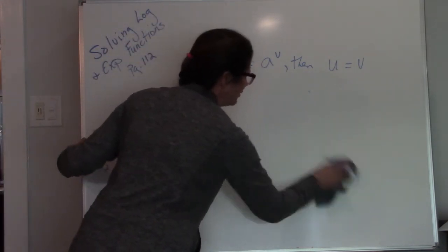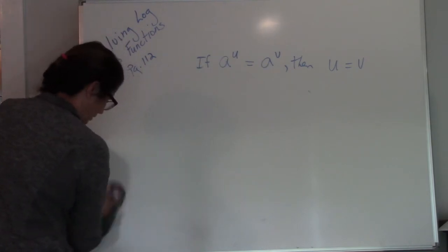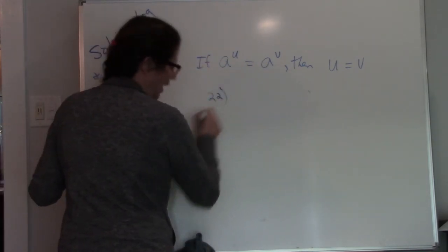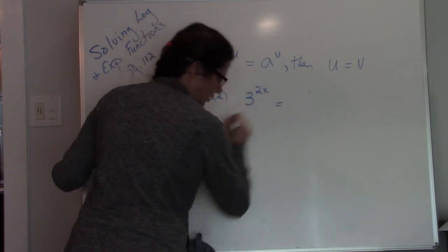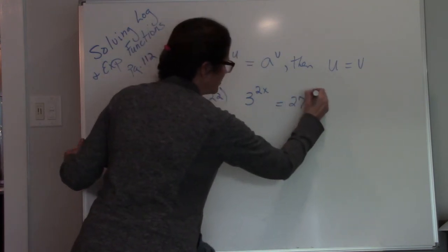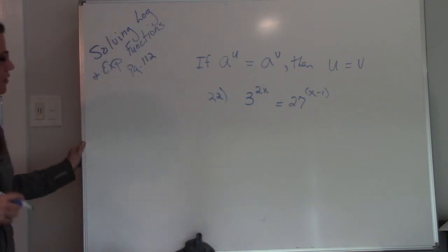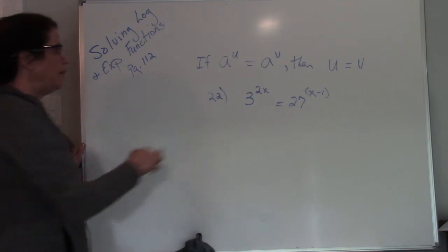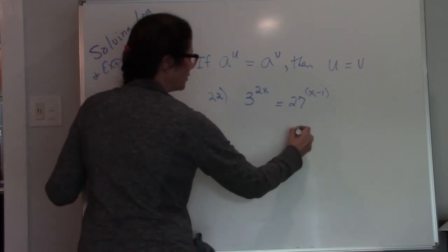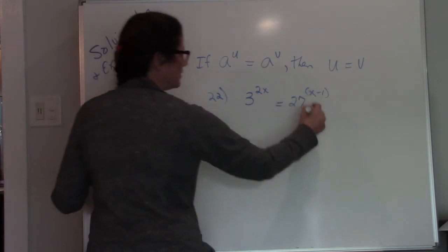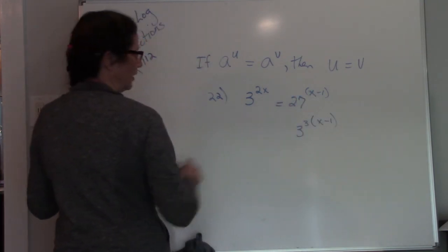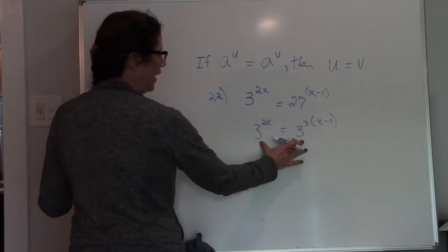As long as the base is the same, then I can set my exponents to be the same thing. So 3 raised to the 2x equals 27 raised to the x minus 1. The first thing you notice is they're not the same base. If they're not the same base, I cannot set my exponents to equal each other. But I can change 27 into 3 to the 3rd power. 3 to the 3rd power does equal 27, but I still have this x minus 1 involved. Now I have the same base.